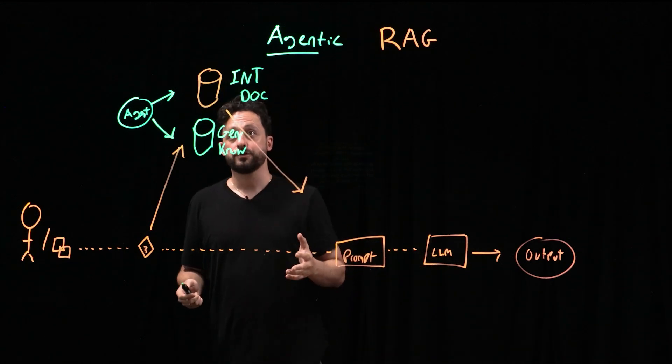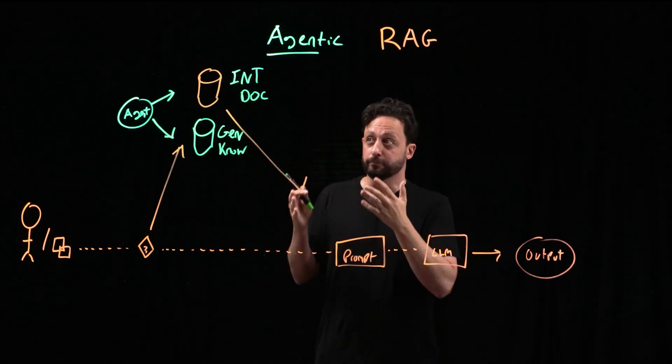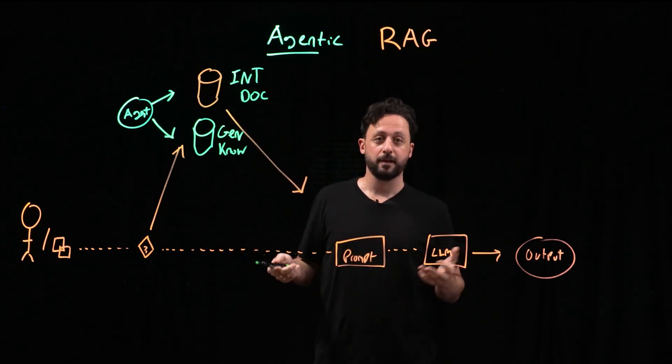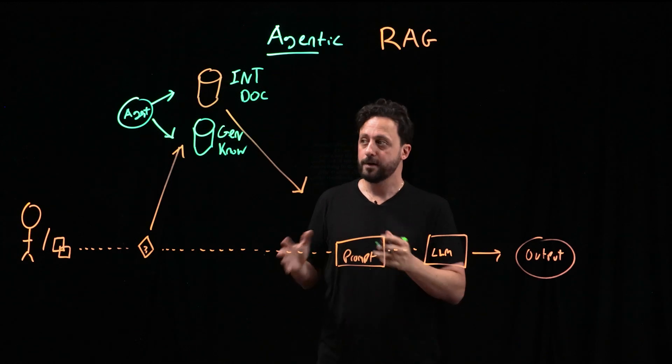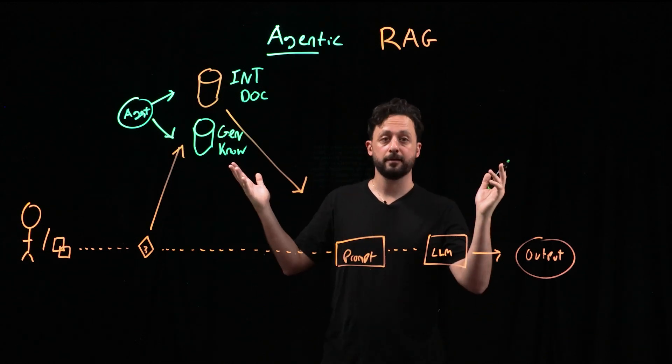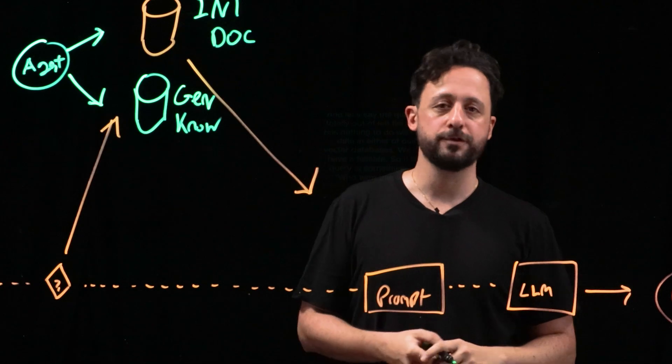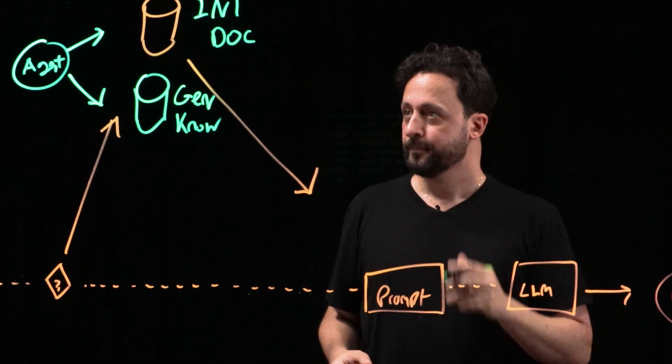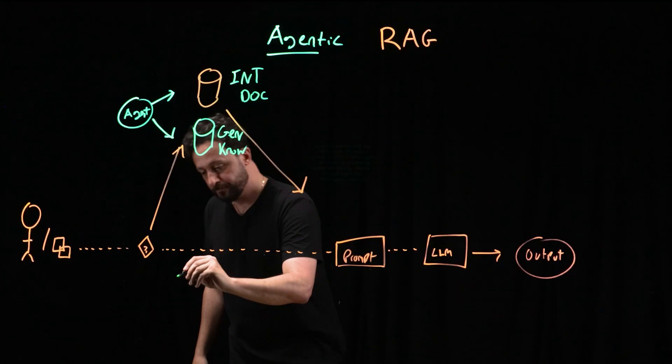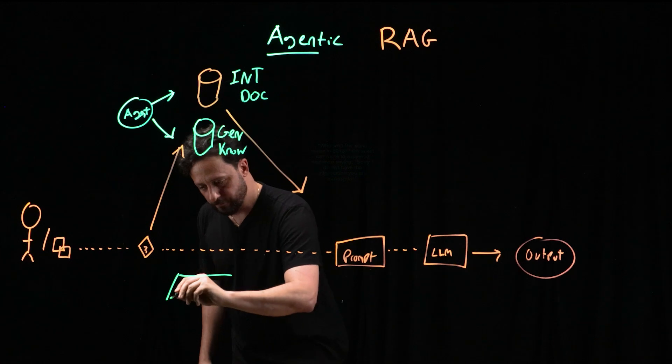But they're not always going to ask questions that are genuinely relevant to any of the stuff that we have in our VectorDB. So what if someone asks a question that is just totally out of left field? Like, who won the World Series in 2015? What the agent can do at that point is it could route it to a failsafe.